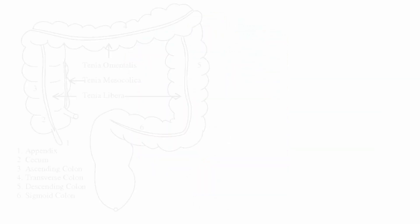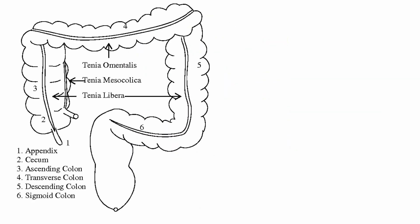Teniae coli are three bands of visible longitudinal muscle. They are the teniae libera, which is not attached to mesentery; teniae mesocolica, which is medially attached in the ascending and descending colons; and teniae mentalis, which is anteriorly present in the transverse colon.